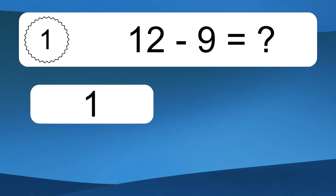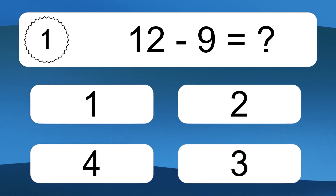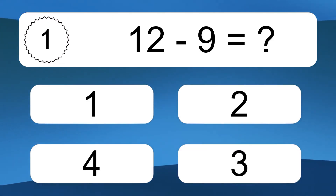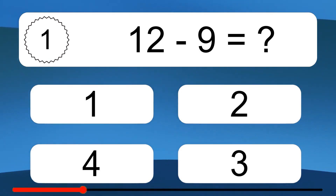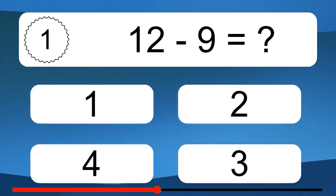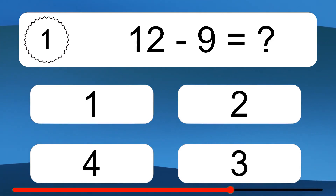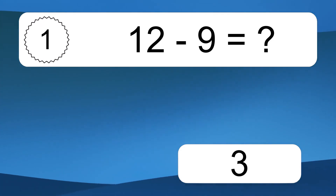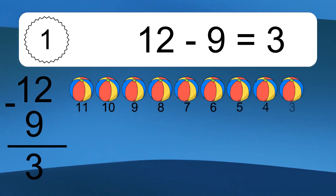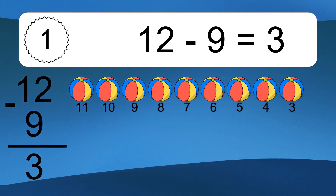12 minus 9 equals what? 12 minus 9 equals 3.